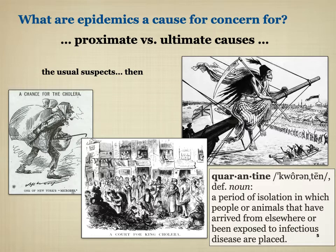They also tended to target outsiders and immigrants. You can see in the upper right a cartoon depicting a pandemic coming from abroad and the New York Board of Health's effort to create a barricade. They would also blame the moral corruption of people as giving rise to physical, sanitary corruption. Their responses reflected these beliefs about the causes of epidemics.